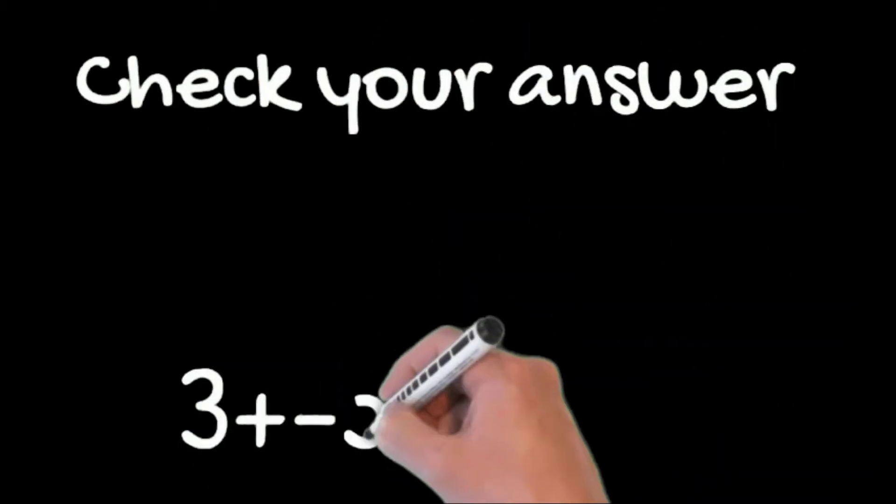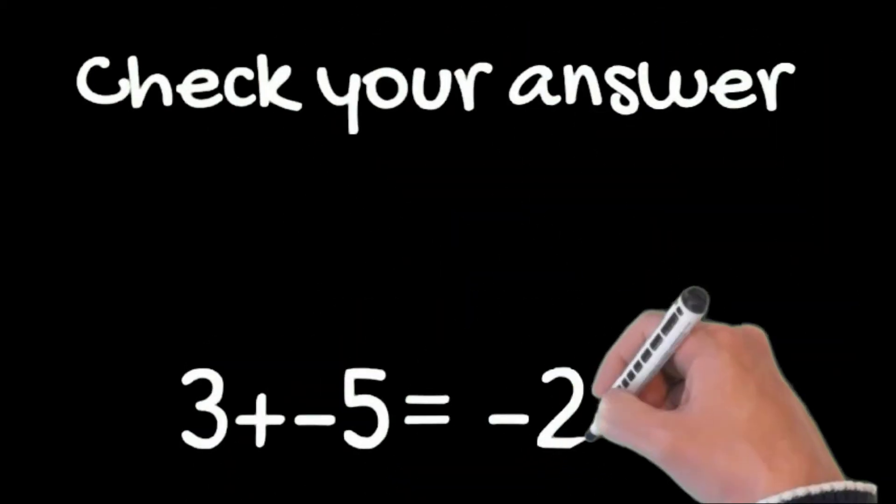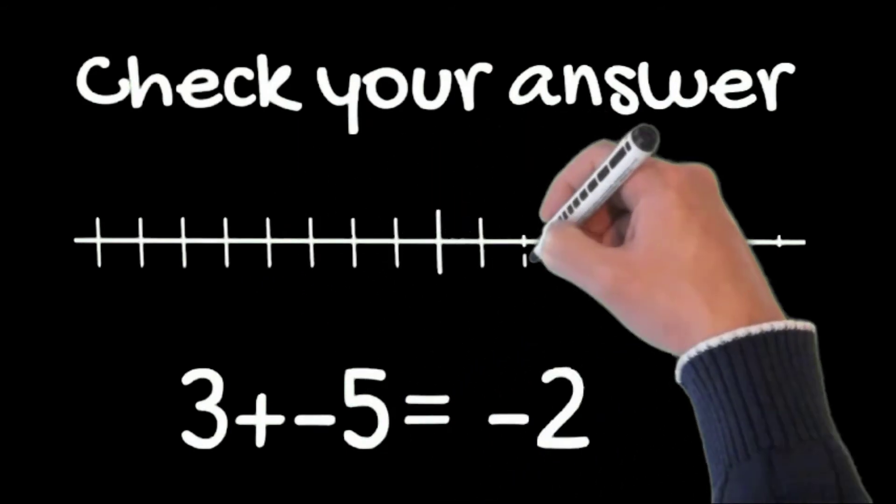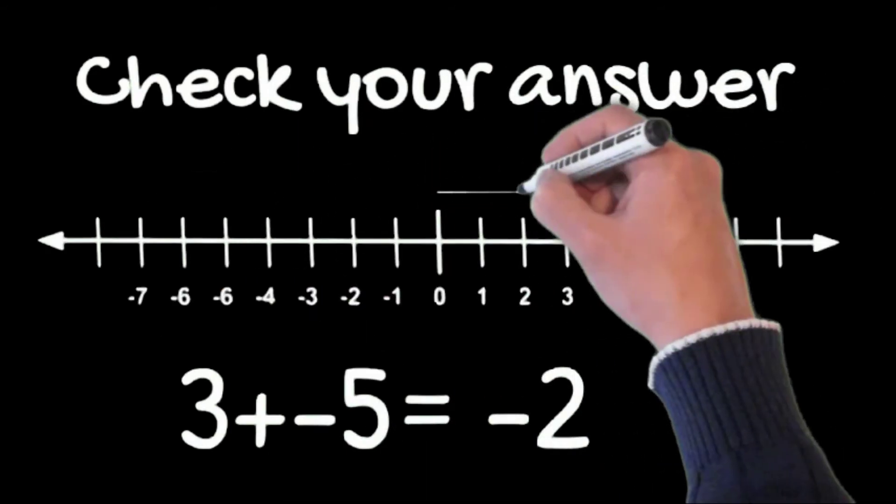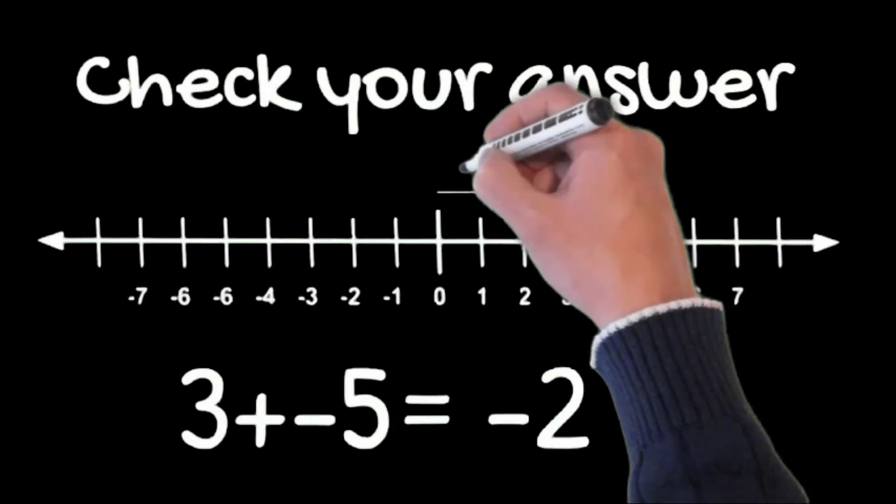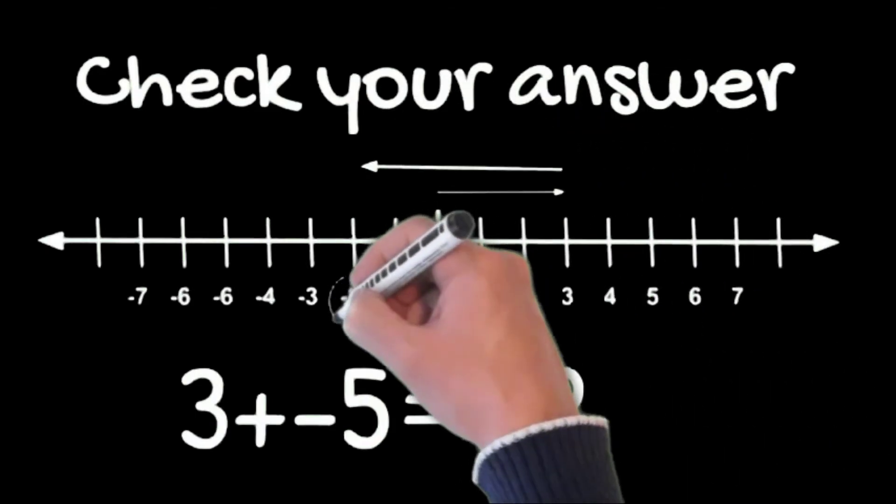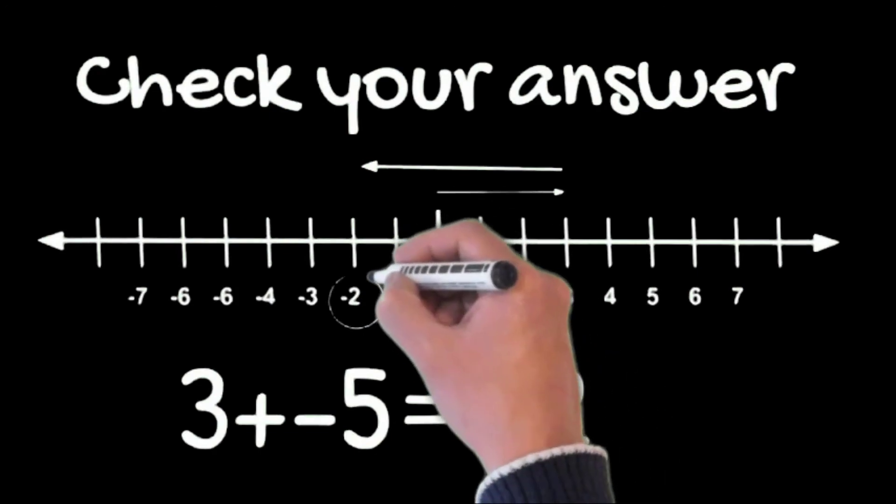So 3 plus a negative 5 equals a negative 2. If we go 3 to the right and then we go 5 to the left, you see we go past 0 and the result is negative 2.